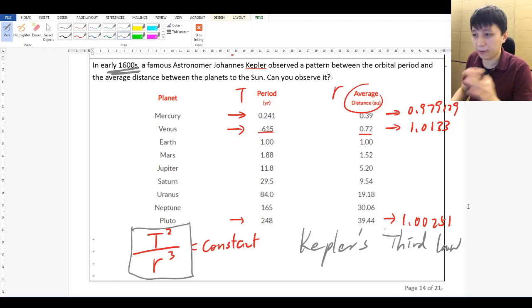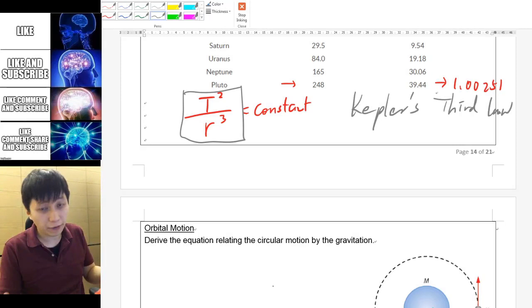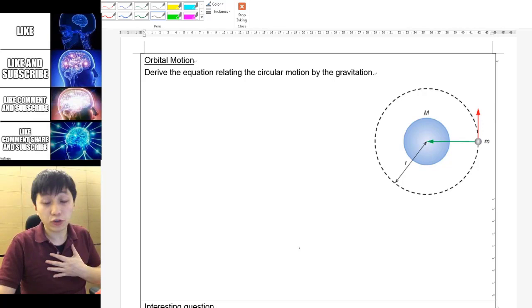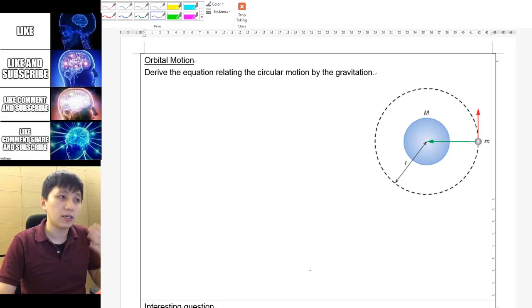One way of finding out Kepler's law from deriving equation could be considering the orbital motion. In fact, what I'm trying to ask you to do right now is going to be a reverse engineering. In fact, like I said in the history, the Kepler's Third Law came out first, and then we have the gravitational force.